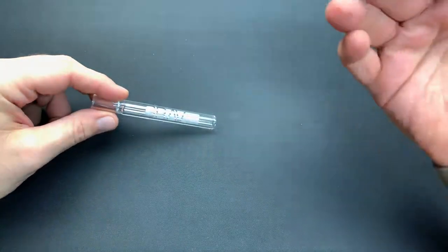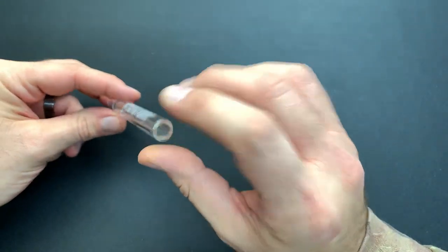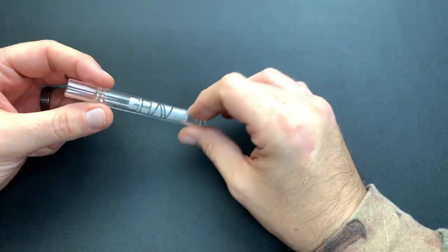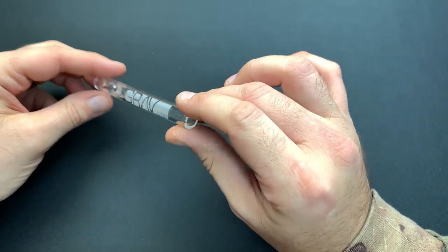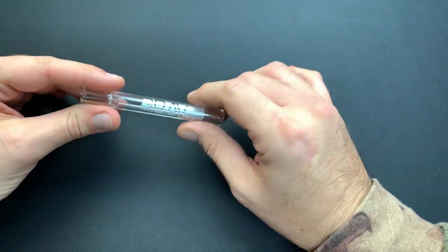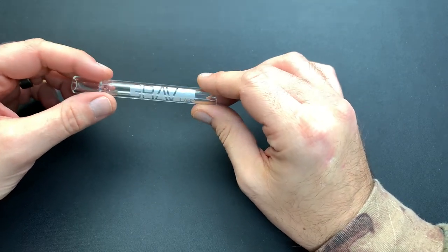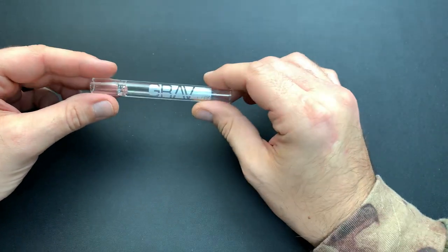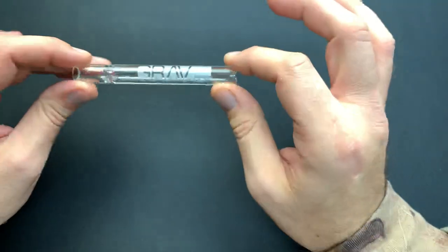So we got this GravLabs Chillum here and the one thing that I did like about it right off the bat was what it was made of. It's made with the borosilicate pyrex glass so you don't have to worry about this shattering under extreme temperatures. So if you did want to hit this with a torch or something, you wouldn't have to worry about that. That is one thing that is nice about this, what it's made with.